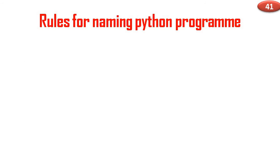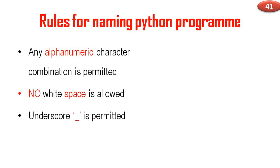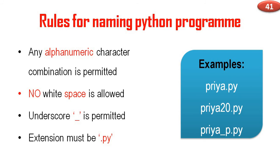Now, rules for naming a Python program: any alphanumeric character combination is permitted, no white space is allowed, and underscore is permitted. The extension must be .py. For example, Priya.py is an acceptable name, and Priya20.py is an acceptable name.